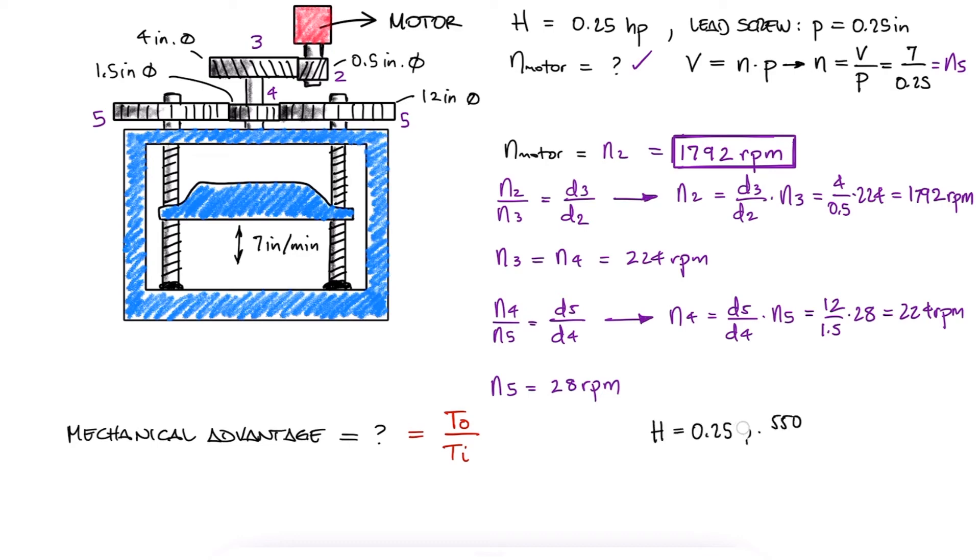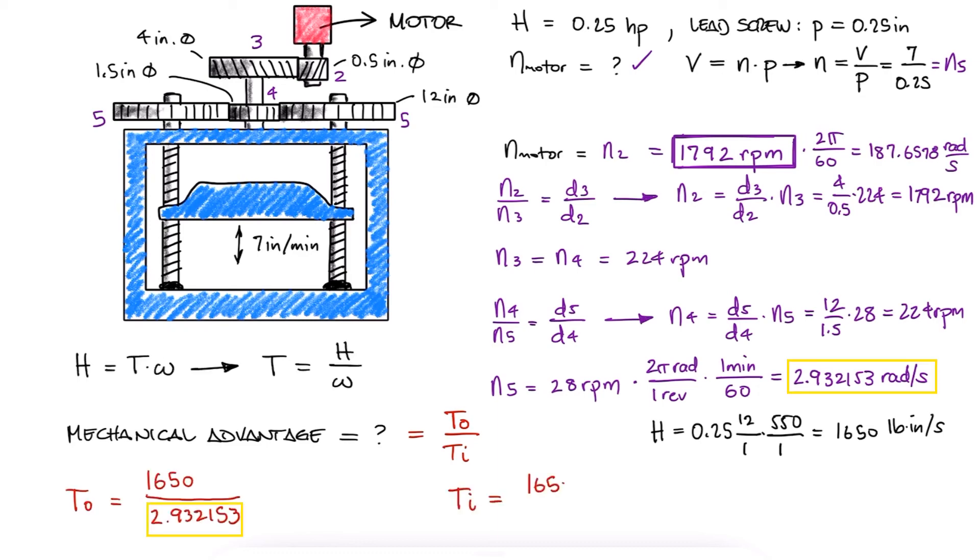With 0.25 horsepower in pound-inch per second, and with the rotational speeds as angular velocities in radians per second, we divide power by angular velocity to find the torques.